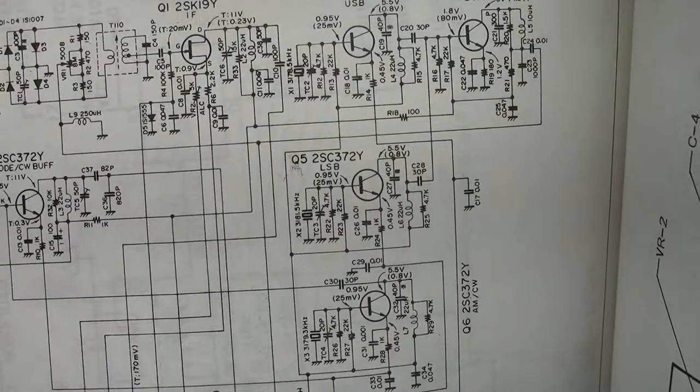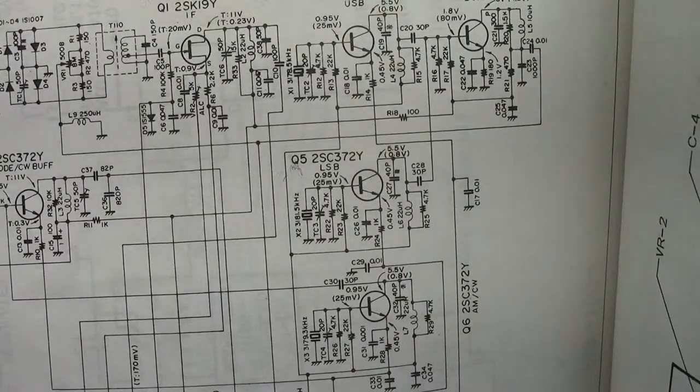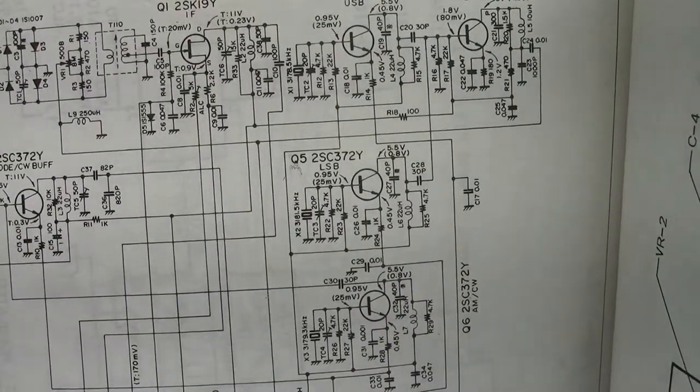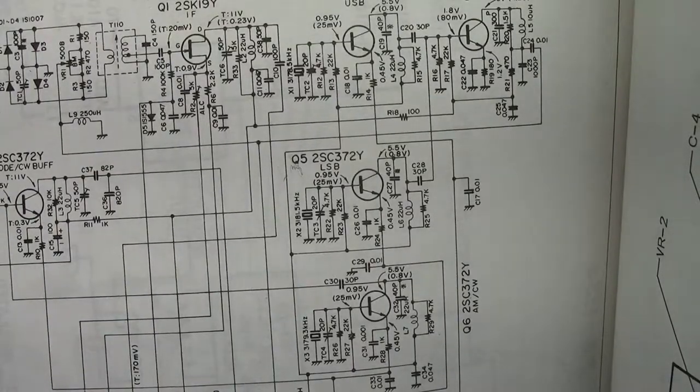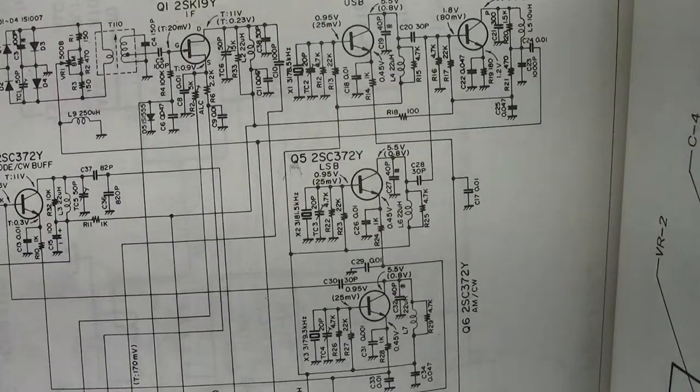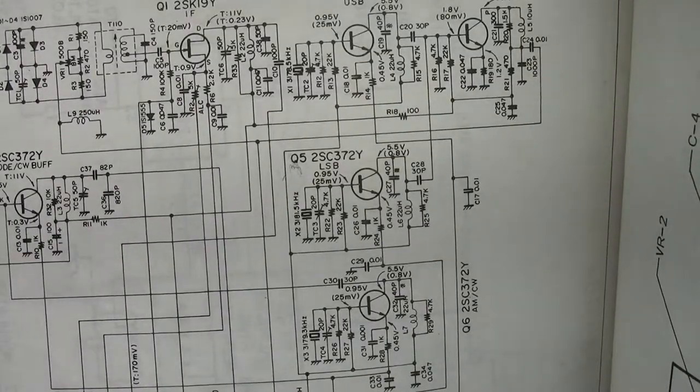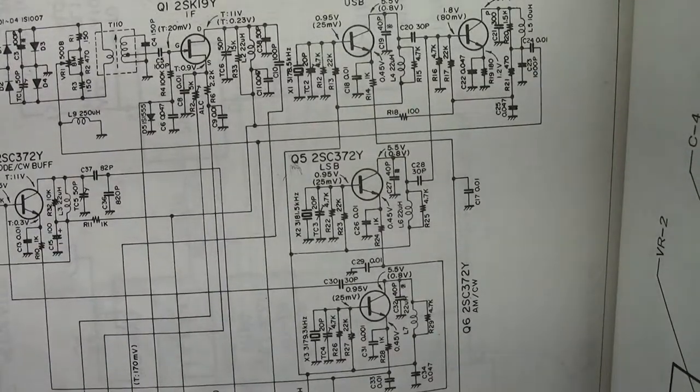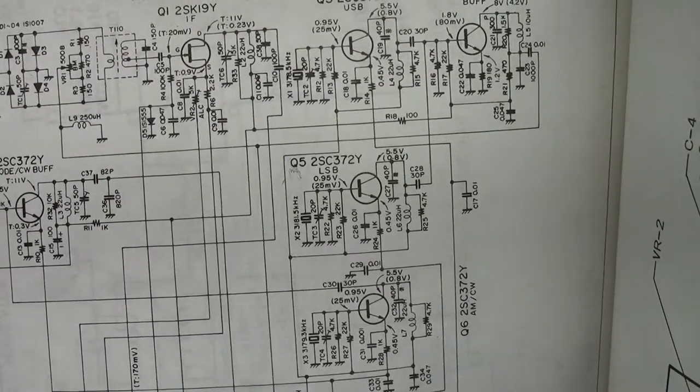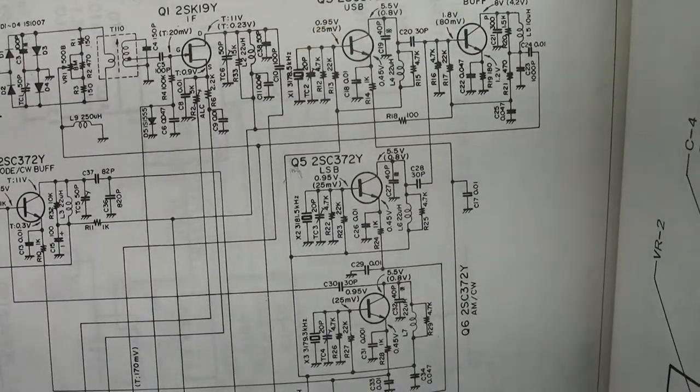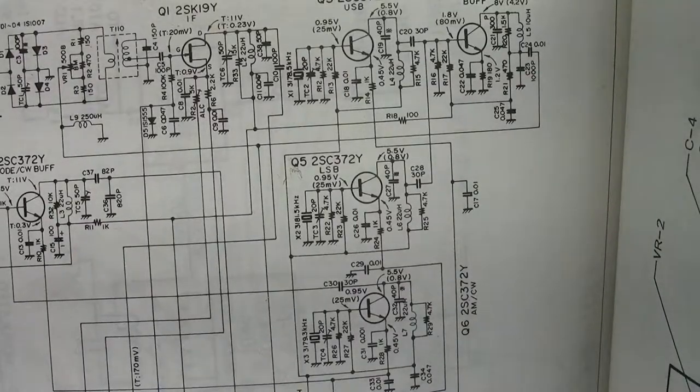You key your mic down and put the transmitter in the transmit position and you tune across the signal with your shortwave receiver. What you should not hear is a signal like a side tone being generated at the same time. If that's what you hear you have a problem in your balance modulator circuit.